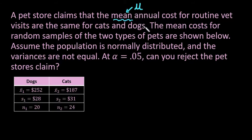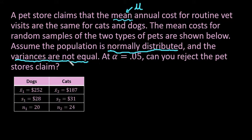The problem tells us to assume the population is normally distributed and that the variances are not equal. Because it says the variances are not equal, this tells us that we don't pool. The only time you pool is if you have equal variances and you know they are equal. If the variances are not equal to each other, it's very dangerous to pool and it can mess things up. It's always better not to pool unless you are told that the variances are equal.